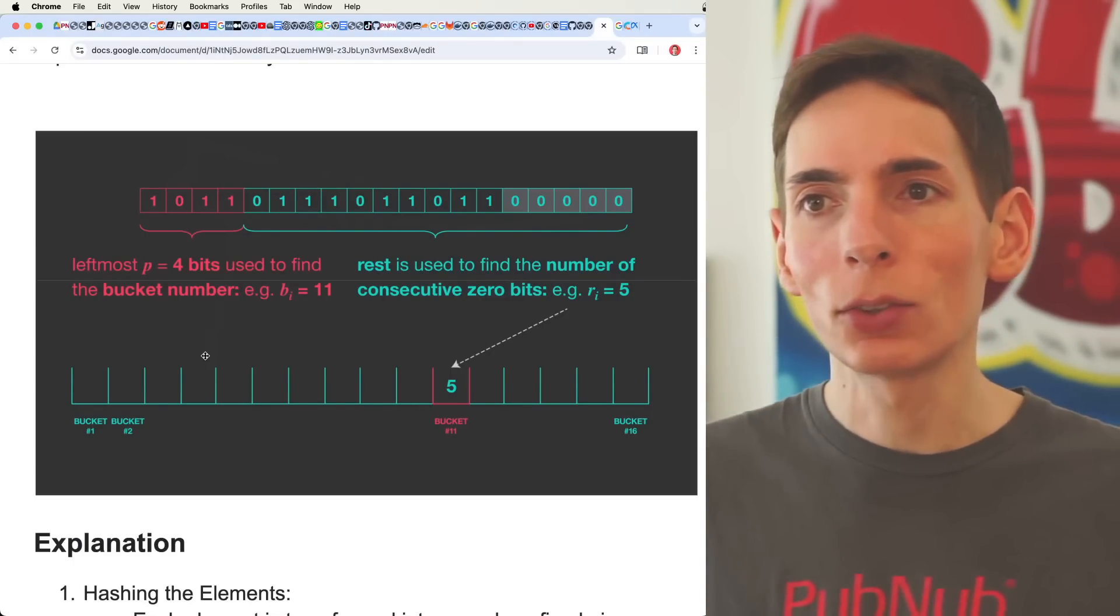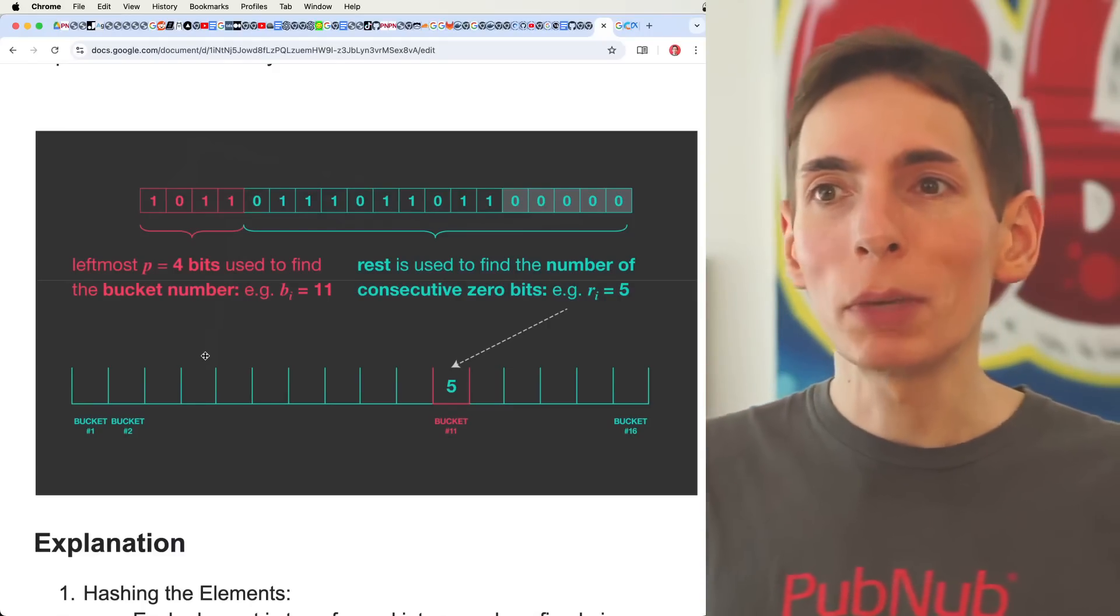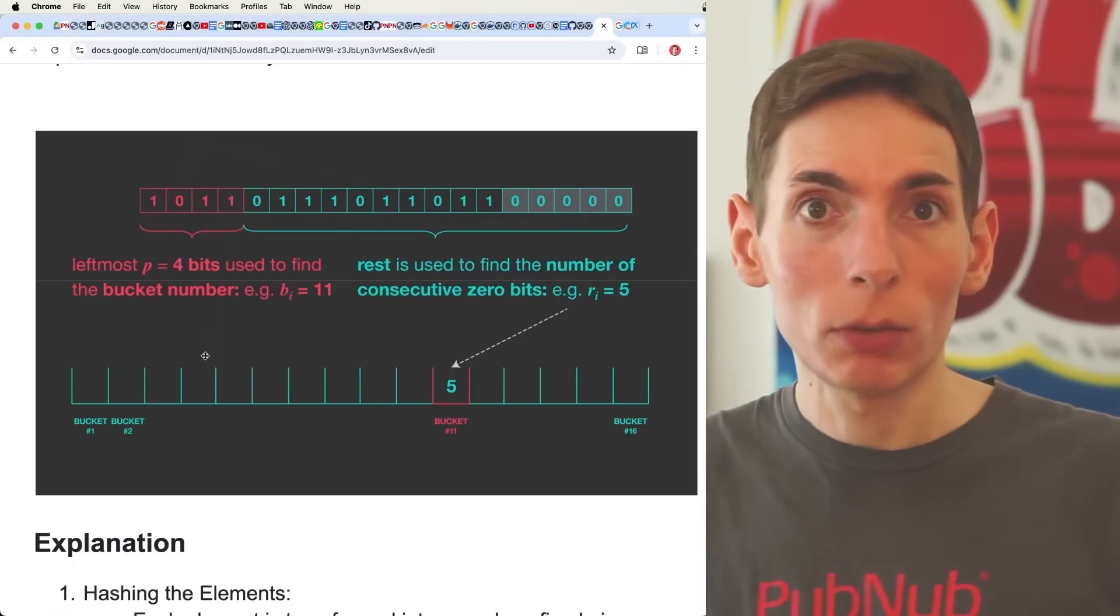But if you have a large number of buckets, you're going to consume more memory because you need more 64-bit integers in there. You will be able to increase the accuracy range.